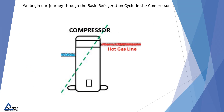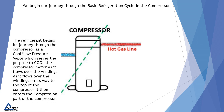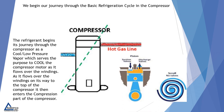We begin our journey through the basic refrigeration cycle in the compressor. The refrigerant begins its journey through the compressor as a cool, low-pressure vapor, which serves the purpose to cool the compressor motor as it flows over the windings. As it flows over the windings on its way to the top of the compressor, it then enters the compression part of the compressor.